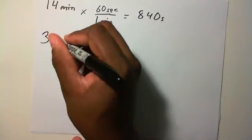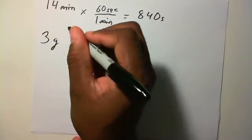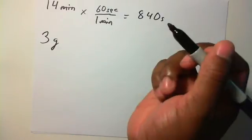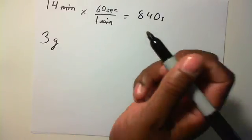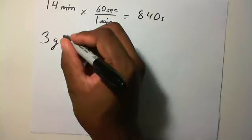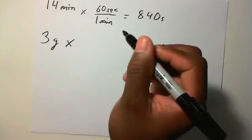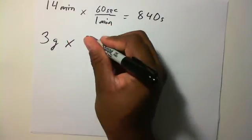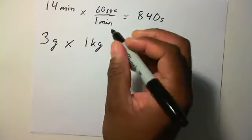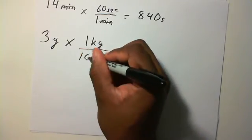Let's try another one. You have three grams and you want kilograms. So what you would do is you want kilograms, so you want one kilogram on top. How many grams are in a kilogram? A thousand.